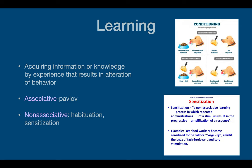Learning can be associative or non-associative. The definition is basically the acquisition of information or knowledge that results in a permanent alteration of behavior. For associative learning, just know Pavlov's experiment — this is conditioning. Non-associative learning is going to be either habituation or sensitization. Sensitization is the non-associative learning process where a repeated stimulus is going to amplify a response.